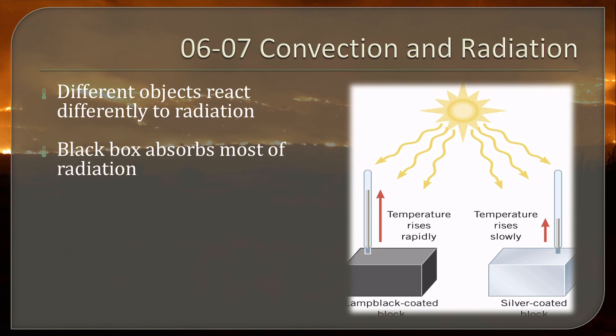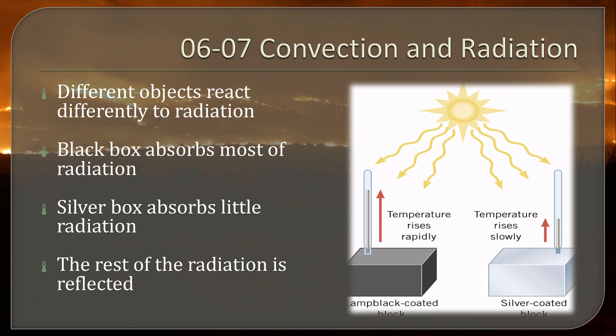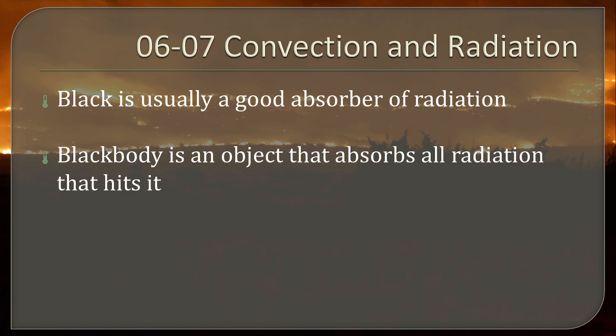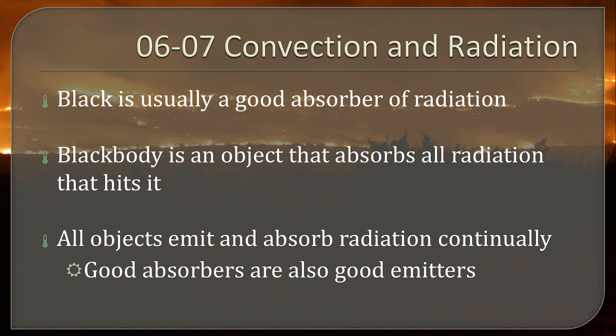Different objects react differently to radiation. A black box will absorb most of the radiation. A silver box absorbs a little radiation because it's mostly reflected away. So everything else that's not absorbed is reflected. So a black box absorbs a lot, reflects a little. Silver box absorbs little and reflects a lot. Since it absorbs all this radiation, the temperature rises on the black box. So black is usually a good absorber of radiation. So we call a black body an object that absorbs all radiation that hits it. Now there's nothing that's completely a black body, but there are things that are really close.